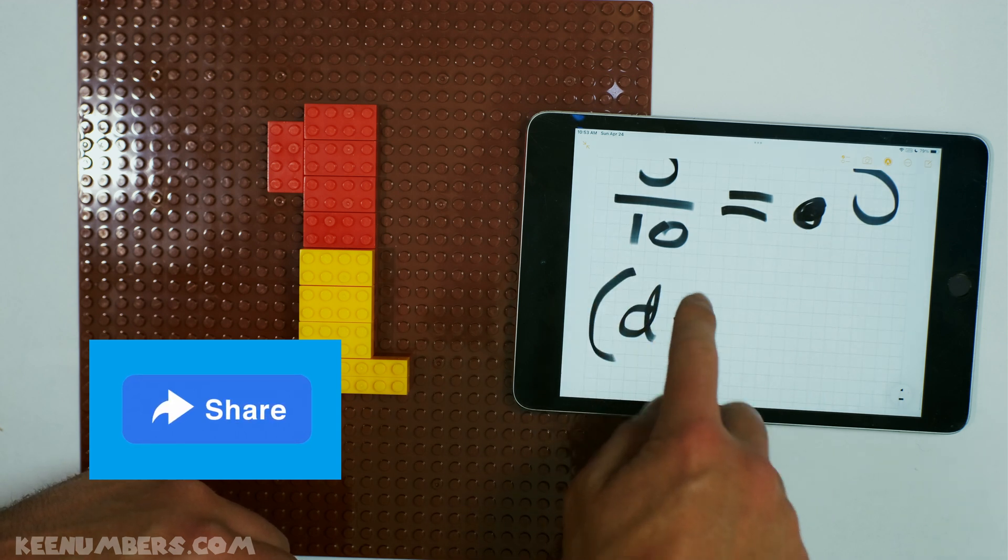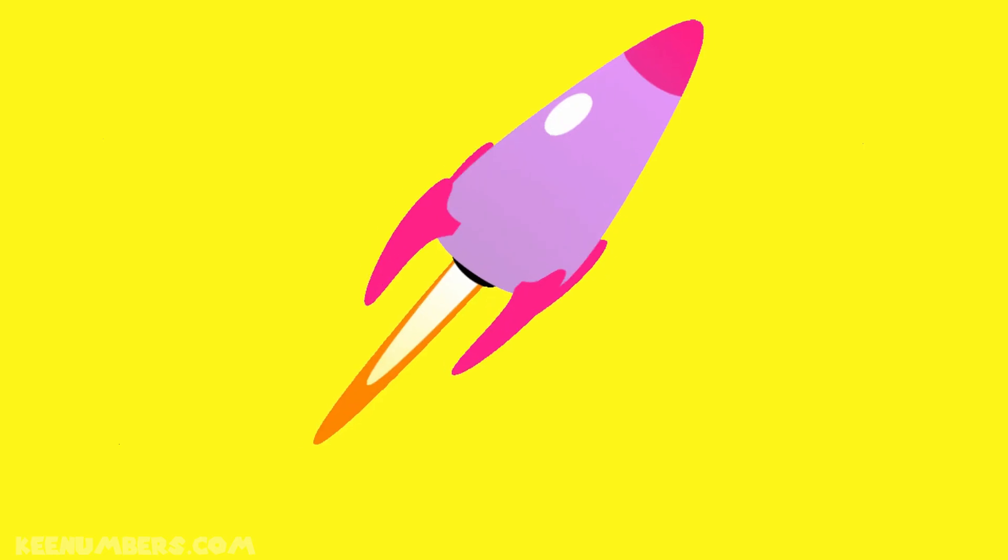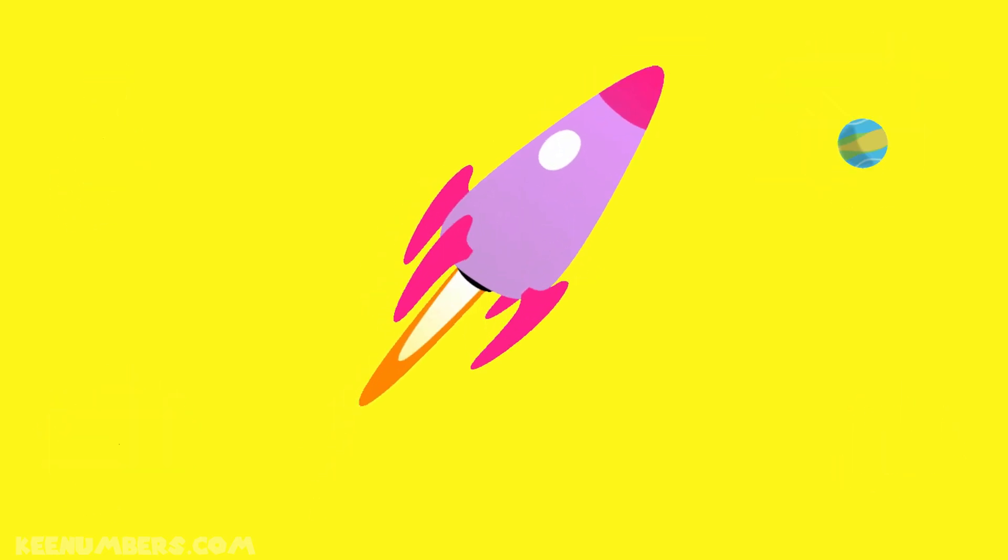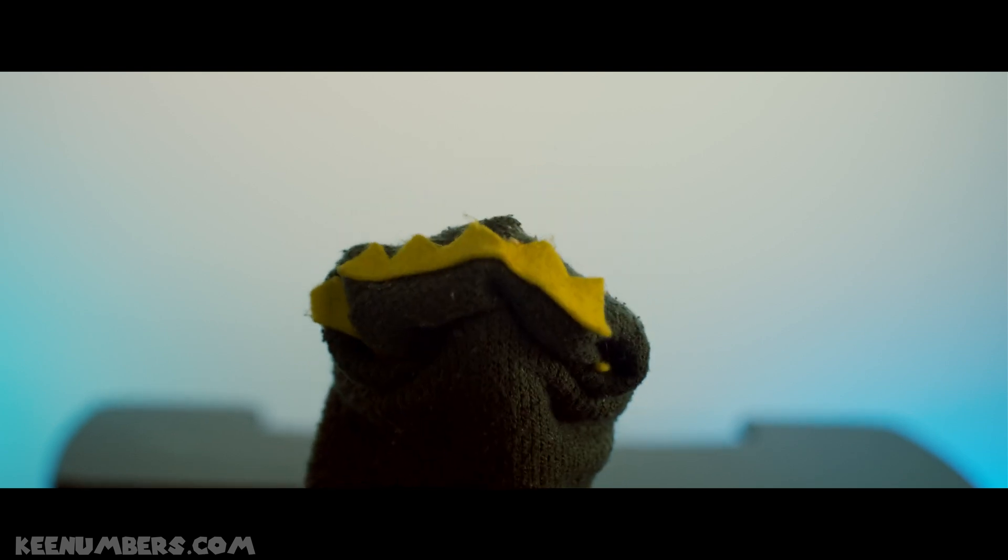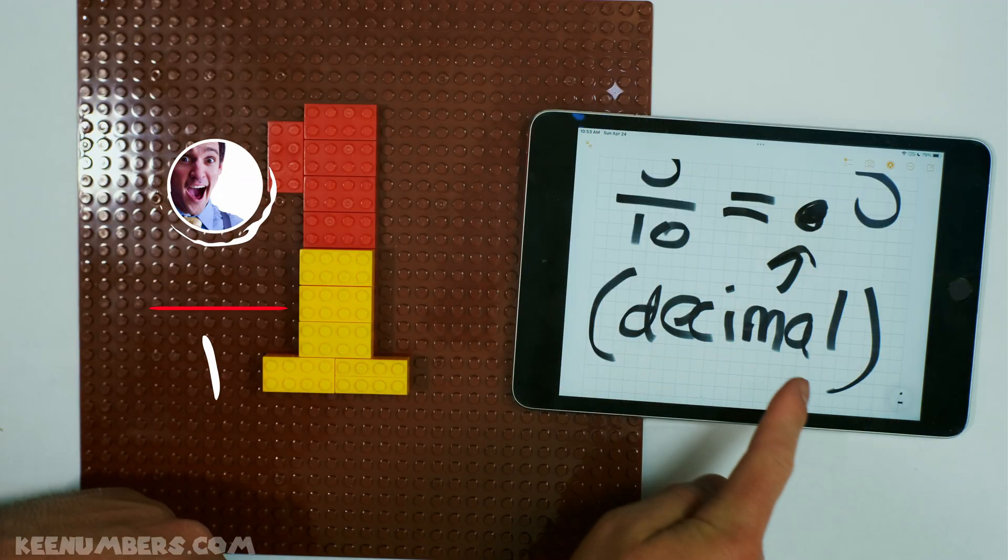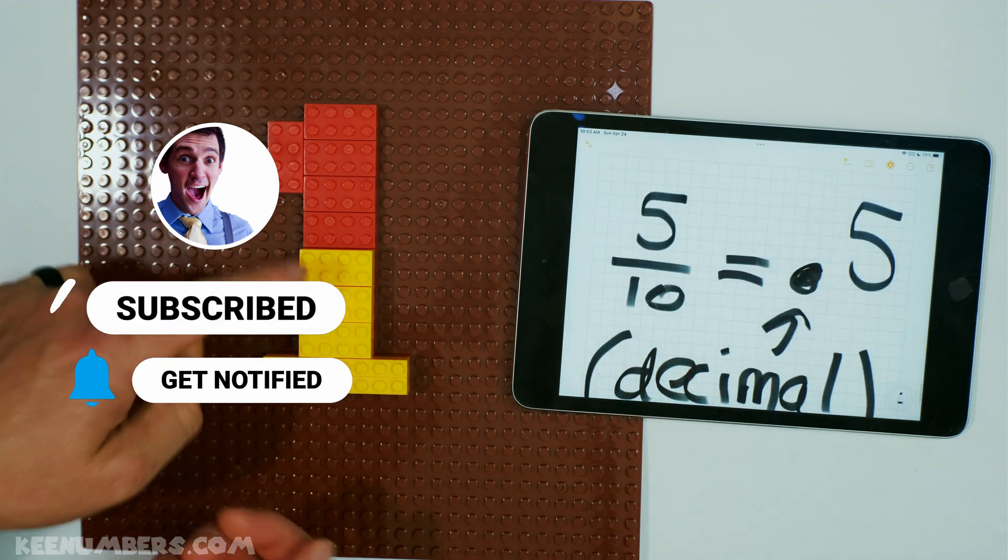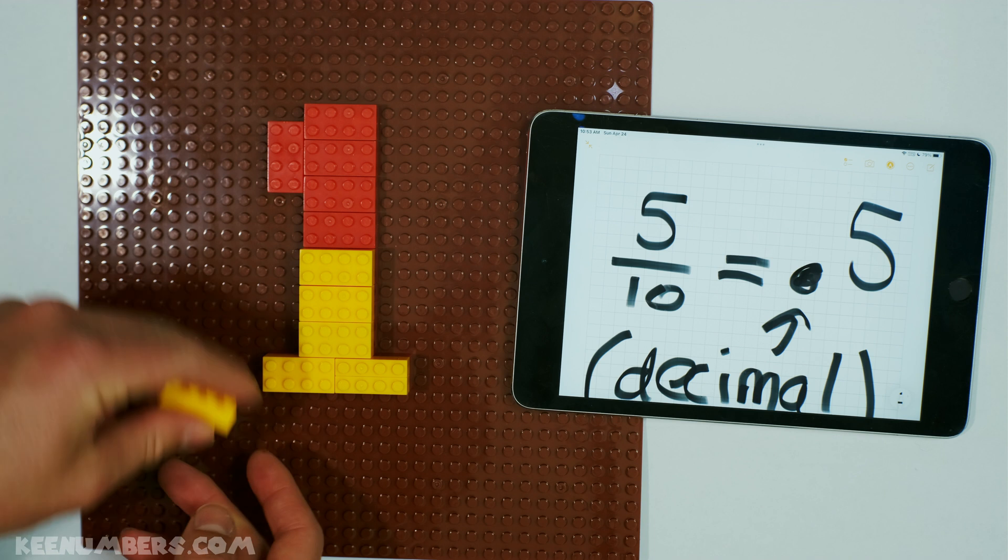Remember, this is a decimal. D-E-C-I-M-A-L decimal. That's what we have when we have the dot. And this right here is halfway through the whole. 5 tenths.